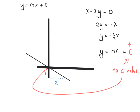The first thing I would do is rearrange this in the form y equals mx plus c. Bringing x over gives 2y equals minus x, so y equals minus a half x. We know straight away that the slope is minus a half. Since it's a negative slope, it's going downhill. With rise over run of 1 over 2, from the origin go down 1 and across 2 to get the second point. Then just draw the line through the two points.